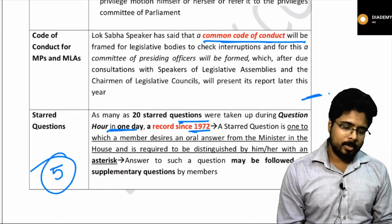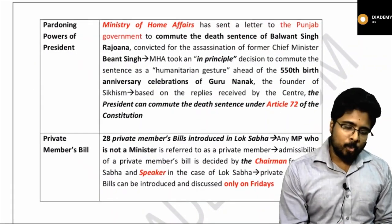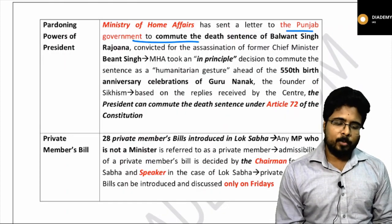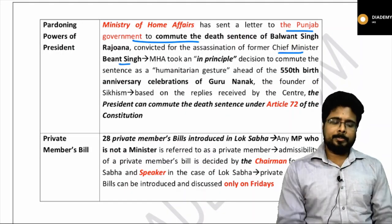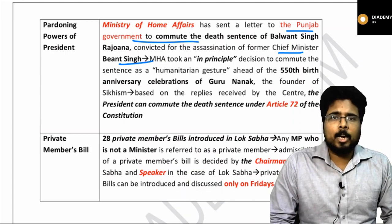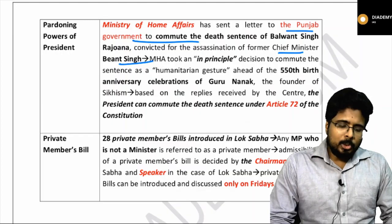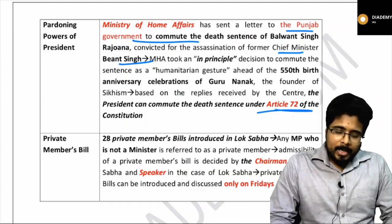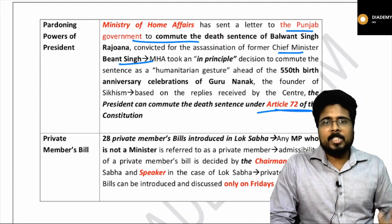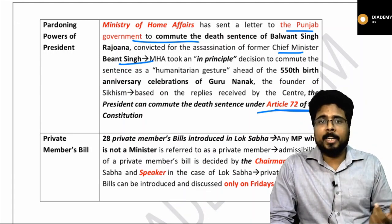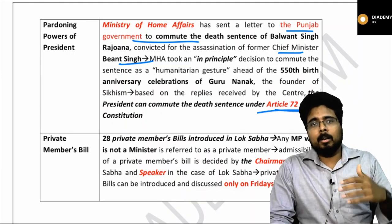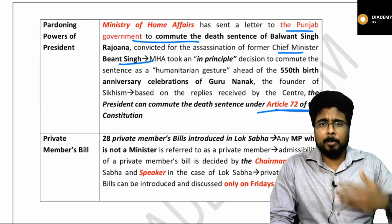Regarding the pardoning powers of the president: the Minister of Home Affairs sent a letter to the Punjab government to commute the death sentence of Balwant Singh Rajoana, convicted for the assassination of former Chief Minister Beant Singh, as a humanitarian gesture ahead of the 550th birth anniversary celebrations of Guru Nanak. The president under Article 72 can commute a death sentence. The president's pardoning powers include: pardon — removing a sentence; remission — reducing a sentence; respite — replacing a sentence due to a special fact; and reprieve — temporarily suspending a sentence.